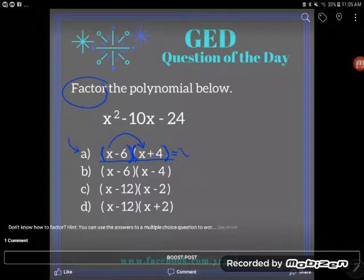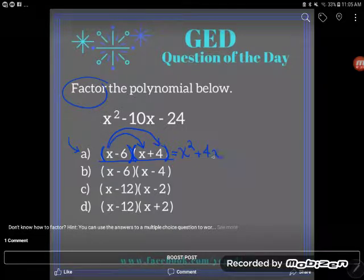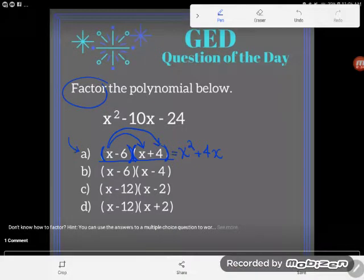So x times x is x², and x times a positive 4 is positive 4x. And now I'm done passing out the first term in the parentheses.